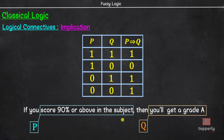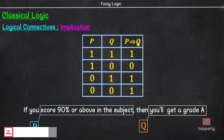So, if you scored 95% in the subject then the premise P is true. And if you got an A grade then the premise Q is also true. So, the promise was kept and hence we can consider the overall statement as true. Therefore, P implies Q is true when both P and Q are true.